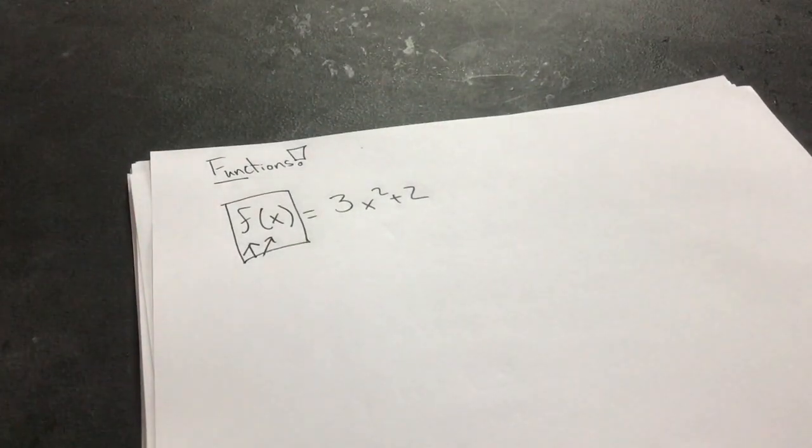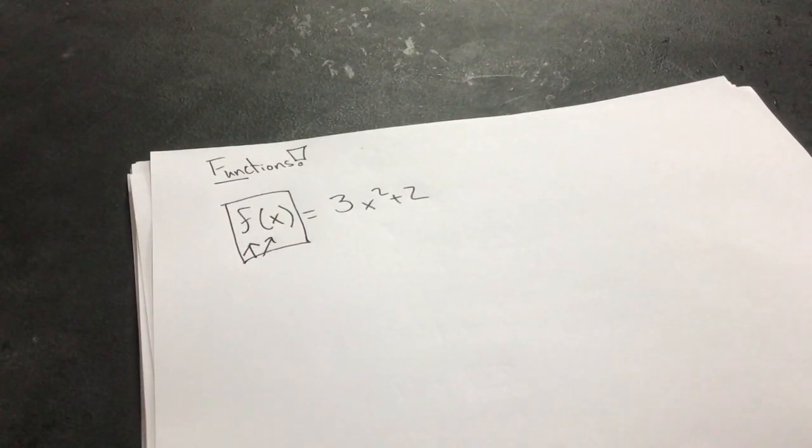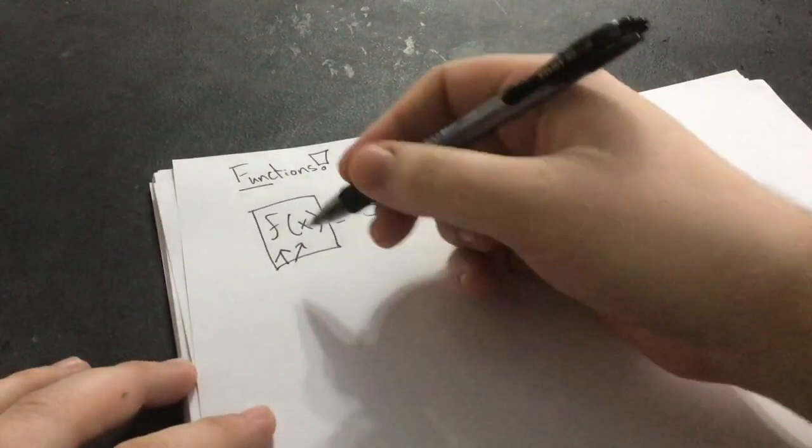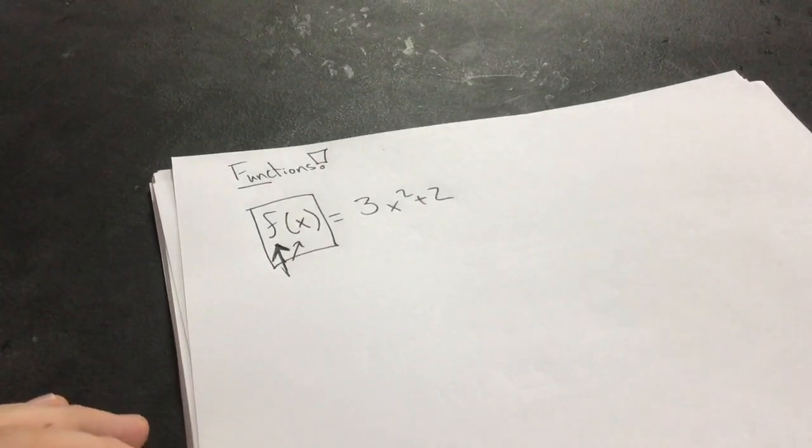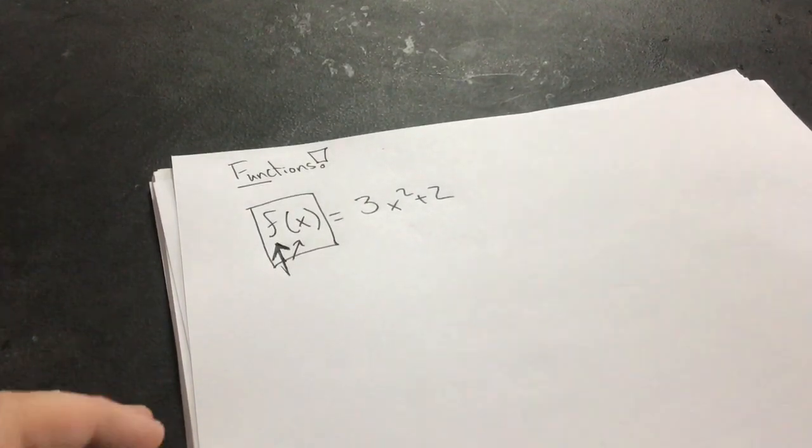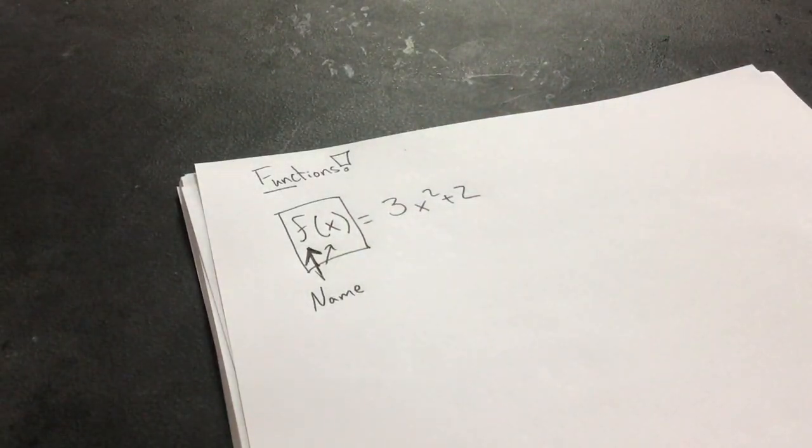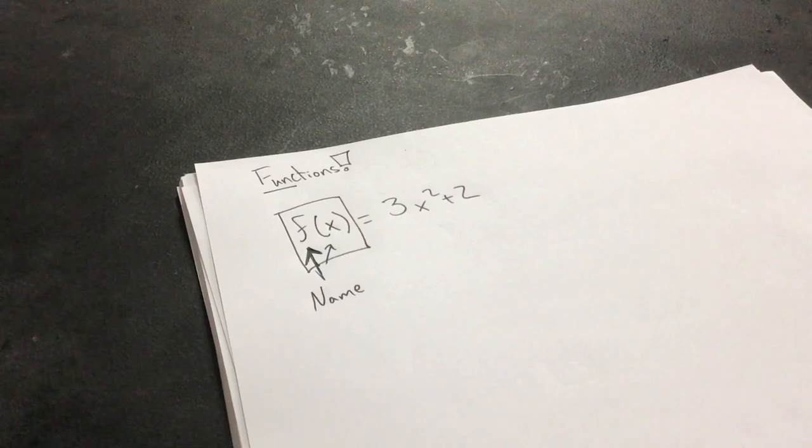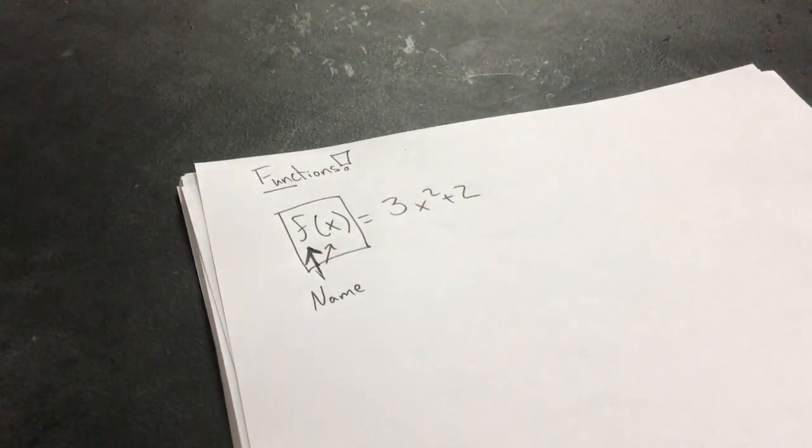That's the big thing. This is what throws people off and confuses people because it looks like more variables and more stuff going on than it actually is. Here's the deal. The letter at the very beginning, f, is what you're usually going to see, but sometimes you might see g or h or i or whatever other letters. This is just a name. This is a name in the sense that we want to be able to look at this equation and say, okay, well, if we're talking about function f, then we need to be looking at 3x squared plus 2.